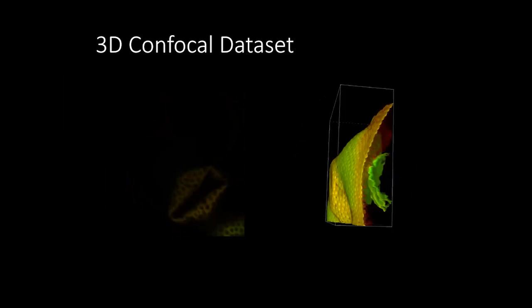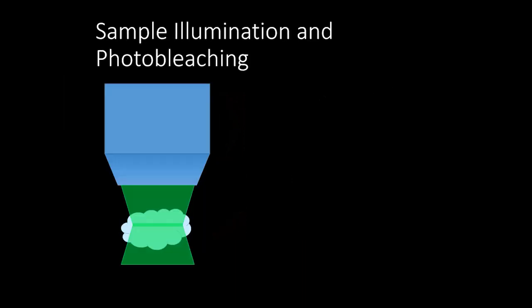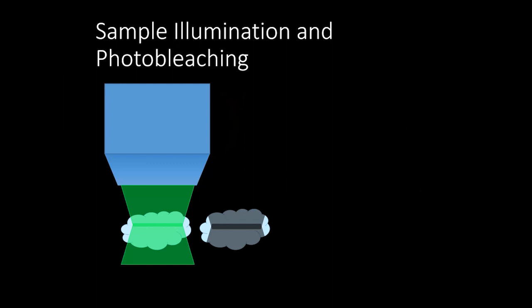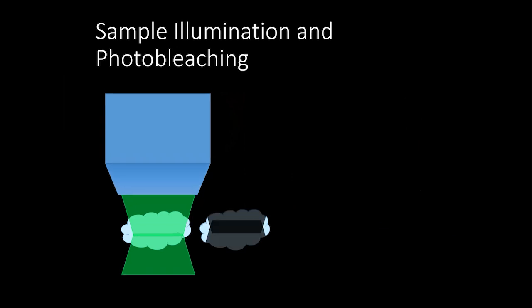One important point: when it comes to photobleaching and photodamage, confocal and widefield are the same — you're illuminating everything in both cases, and the pinhole only cuts out-of-focus light upstream of the detector. In confocal, you're likely taking Z-steps, meaning you're actually taking 30, 40, or 50 images, so you may have more photodamage than with a single widefield image.